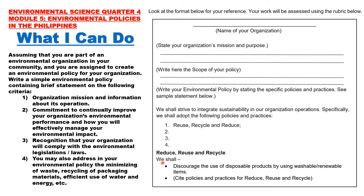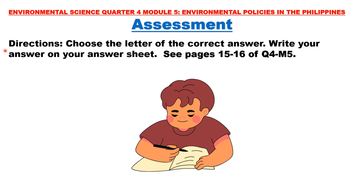Assessment: Choose the letter of the correct answer and write your answer on your answer sheet. See pages 15 to 16 of Quarter 4, Module 5. Additional Activity — Performance Task 4.5: Put a check on the second column if the statement is observed in your barangay. If not observable, write a suggestion on how to meet and practice this indicator. Indicators: 1) garbage/waste are properly segregated per household; 2) incineration of garbage is prohibited; 3) throwing any form of garbage waste in the creek is prohibited (e.g., dead animals, leftover food, shells); 4) residents help in cleaning the community surroundings; and 5) there are posters or signages saying 'Bawal magtapon ng basura dito.'